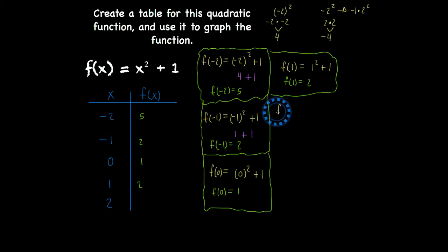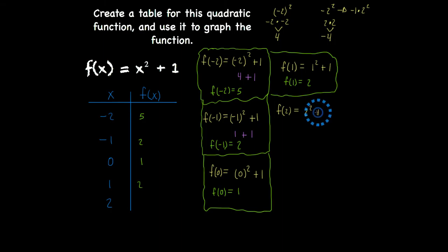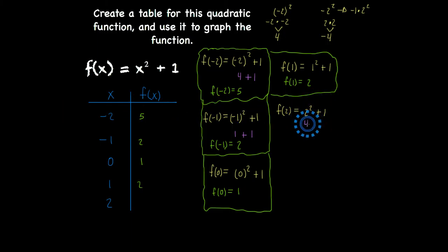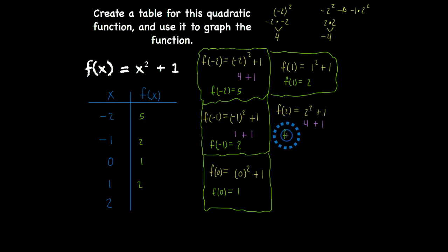Finally, f of 2. f of 2 is equal to 2 squared plus 1. Two times itself — 2 squared — is 4 plus 1. We find that f of 2 is equal to 5.